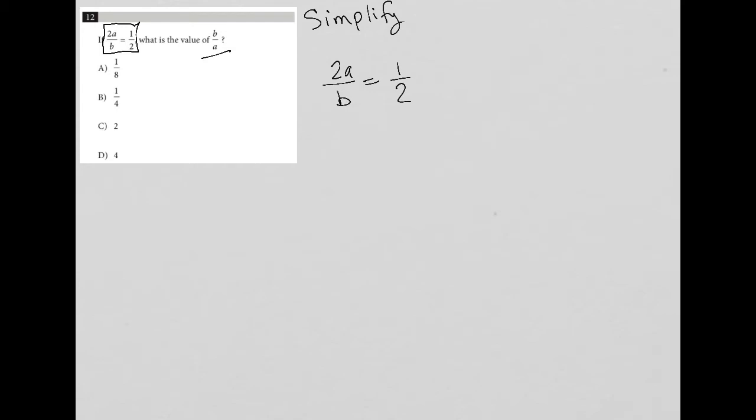But let's see what happens. I am going to just cross-multiply, because that's what you do when you have proportions. So I'm going to have 2a times 2, which is 4a, and b times 1, which is b. So 4a equals b.